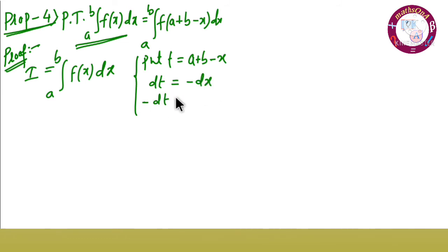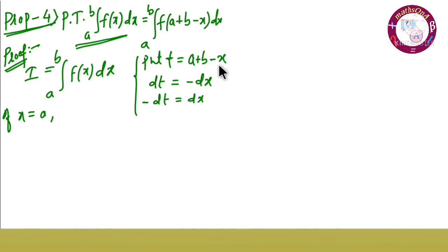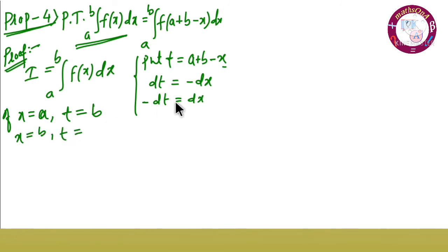Differentiating, dt equals minus dx, so minus dt equals dx. When changing the variable from x to t, we also change the limits. When x equals a, substitute into t equals a plus b minus x: t equals b. When x equals b, t equals a. So the limits interchange.